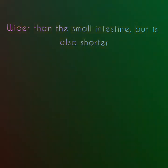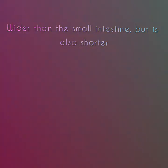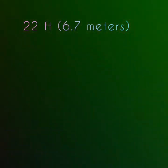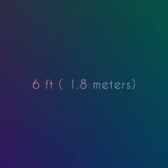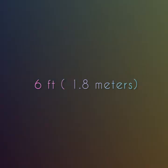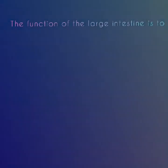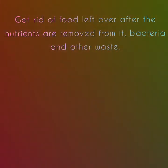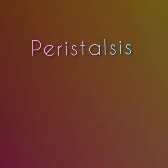The colon is much wider than the small intestine but also much shorter. The small intestine is 22 feet, which equals 6.7 meters long, while the colon is only 6 feet, which equals 1.8 meters long. The function of the large intestine is to get rid of food left over after nutrients are removed — bacteria and other waste. This process is called peristalsis and it can take around 36 hours.